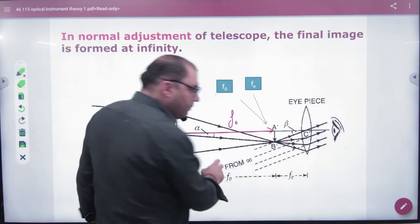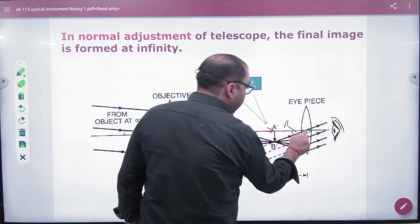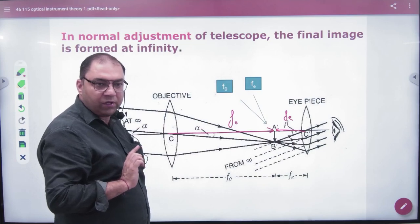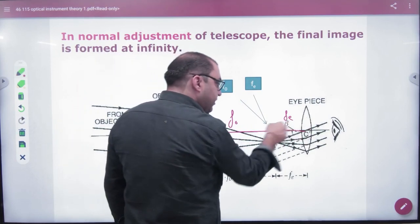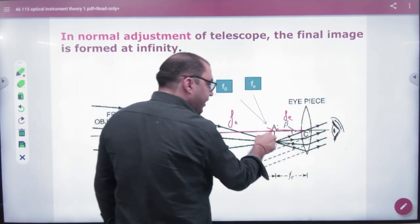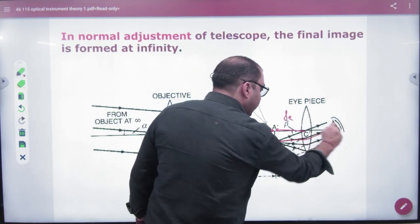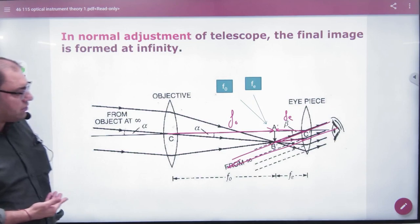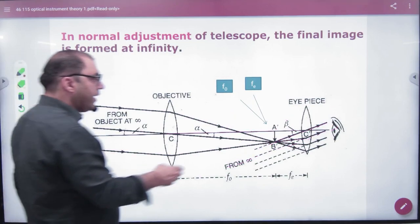Now, because image will be made in infinity, so the distance will be made in eyepiece. Because if the object is found on focal length, when image is found on focal length, then the image will be made at infinity. So you don't need to draw so many lines. You simply draw these lines.